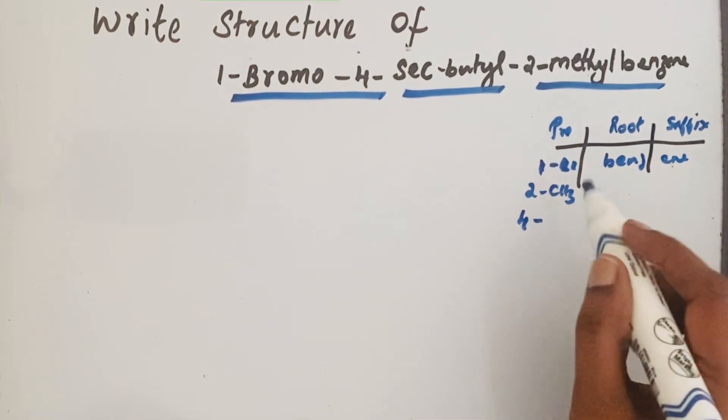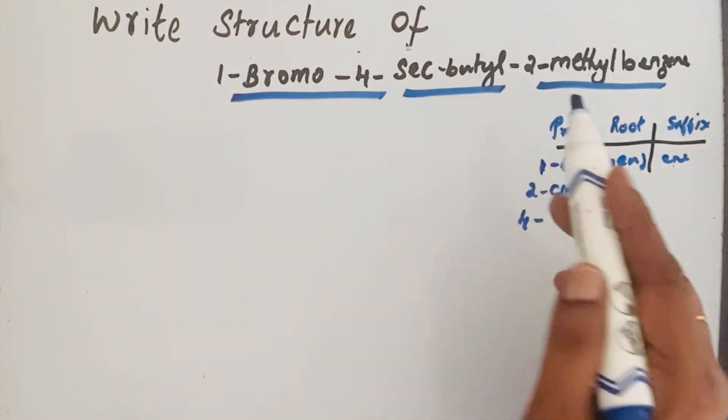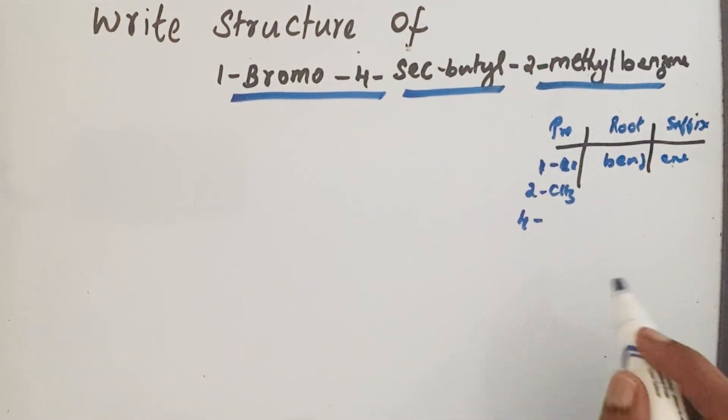To know what secondary butyl is, first understand what is primary and secondary carbon. The carbon, if it is attached to only one carbon, is called primary carbon. If it is attached to two other carbons, for example the middle carbon attached to the left side carbon and right side carbon, this carbon is called secondary carbon.